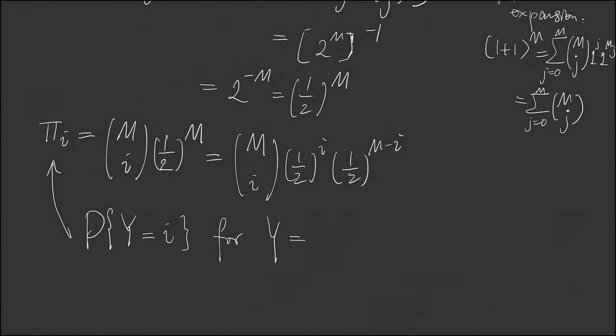And then at the next time step, urn 1 will have one ball and urn 2 will have m minus one ball.